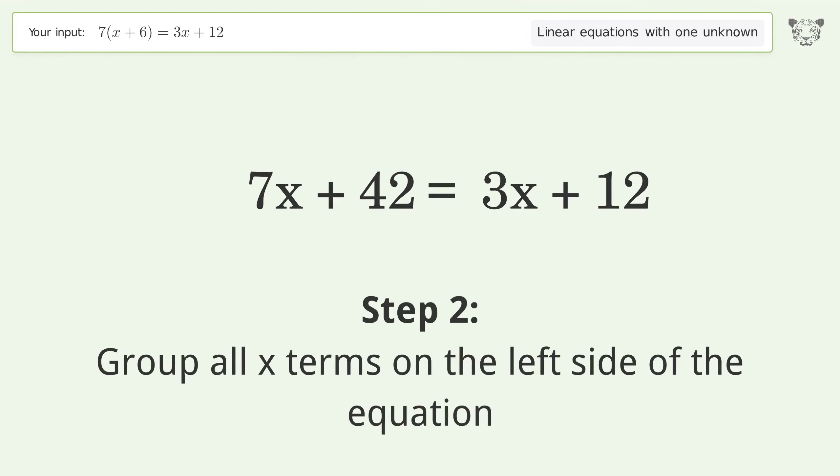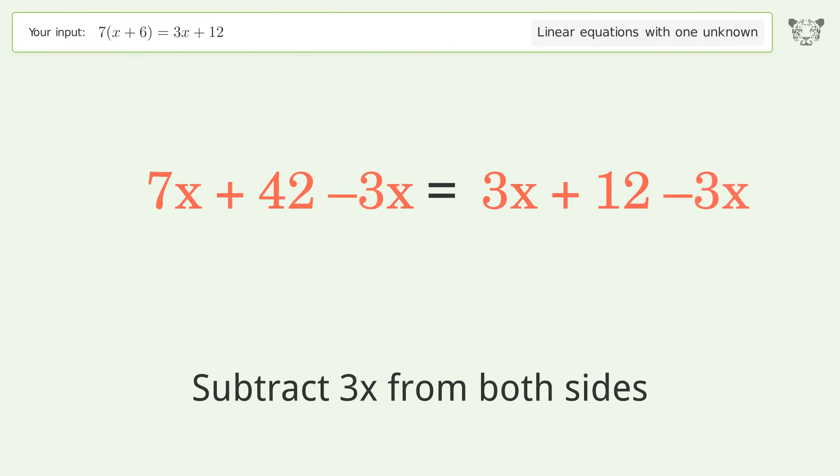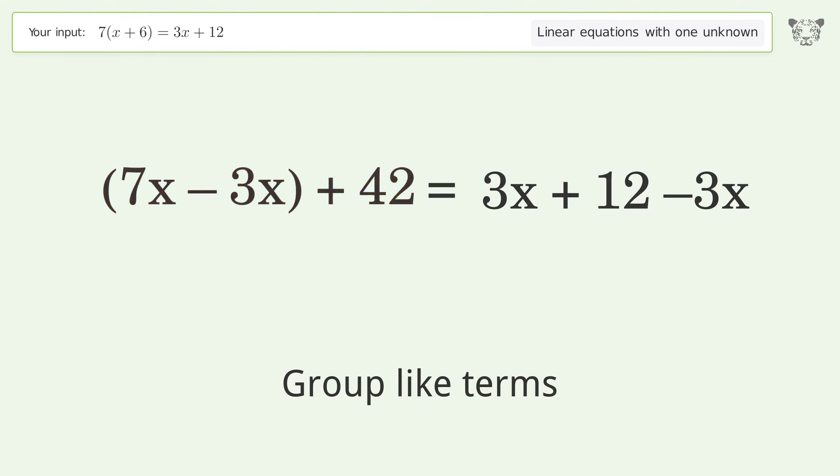Group all x terms on the left side of the equation. Subtract 3x from both sides. Group like terms. Simplify the arithmetic.